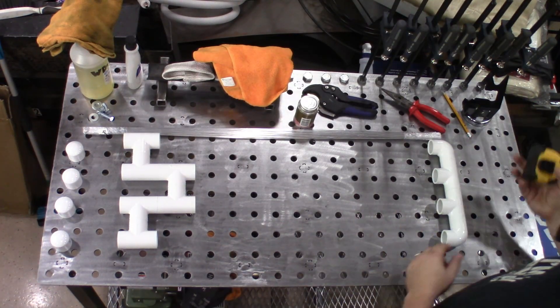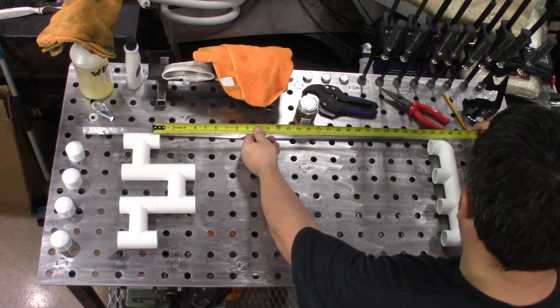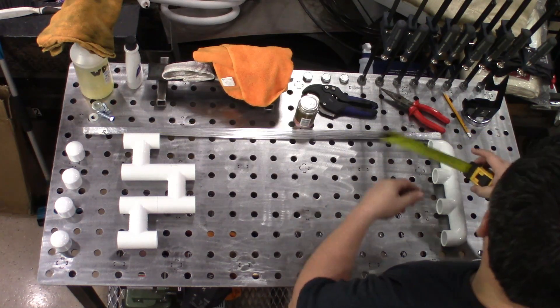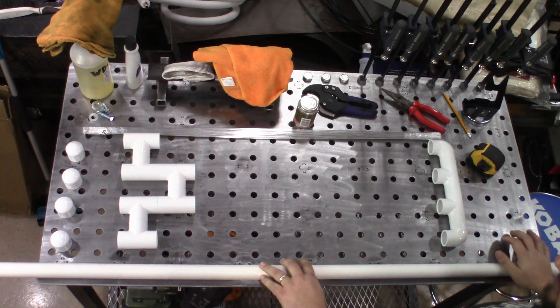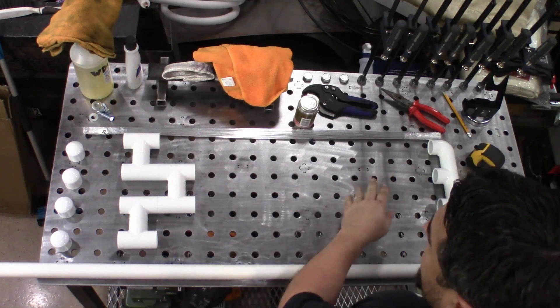Take the tape measure. Doesn't have to be perfect. Looking at about 28 and a half inches maybe. Make it the longer piece. Cut out four pieces out of that. Actually two are going to be 28 inches and then two are going to be even shorter for the inside pieces.